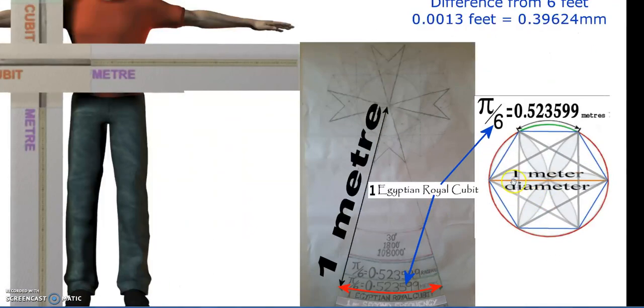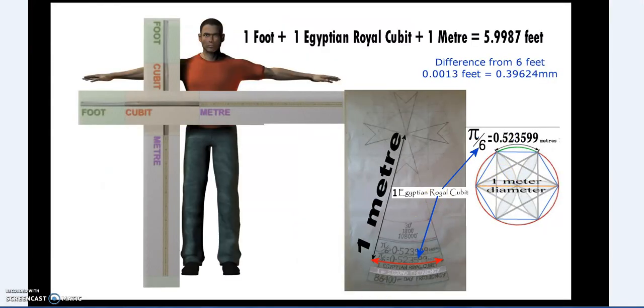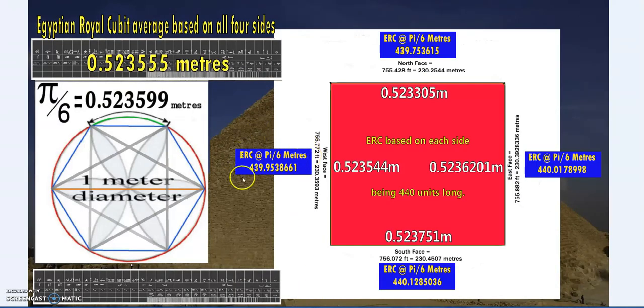If you were to draw a circle half that size with a one meter diameter, 60 degrees or one sixth of the circle would be an Egyptian royal cubit, which brings us back to these small variations in each one.